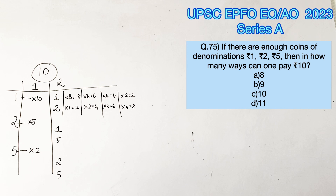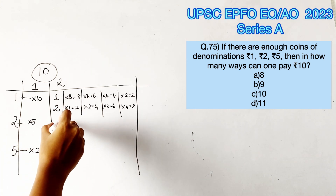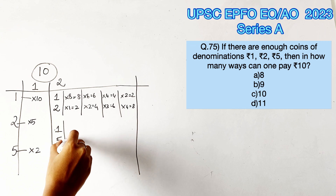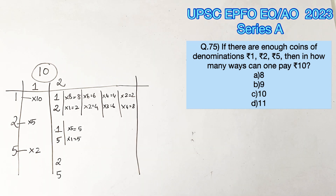Moving on to the next case where we take 5-rupee and 1-rupee coins alone. Taking one 5-rupee coin, the remaining 5 rupees can be paid with 1-rupee coins.